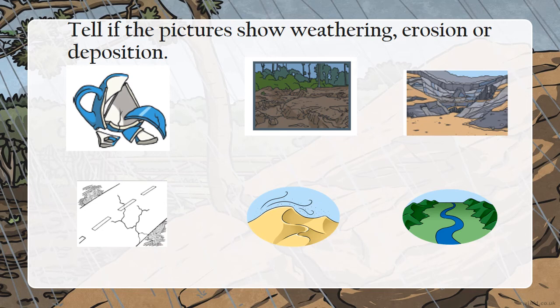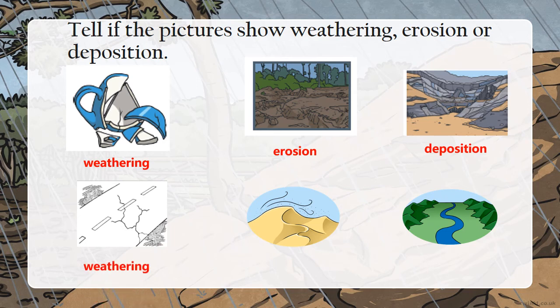The first one — that is weathering, that is breaking. This one is erosion, the moving of the sediments. This one will be deposition, taken to a complete new place. Here we have the weathering of the road. Deposition — taken to a new place. Erosion — moving of the sediments.